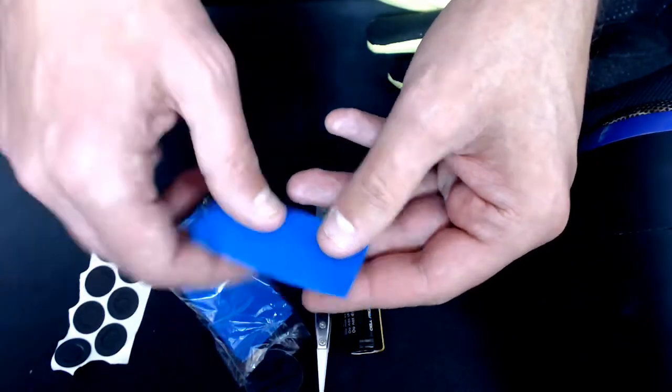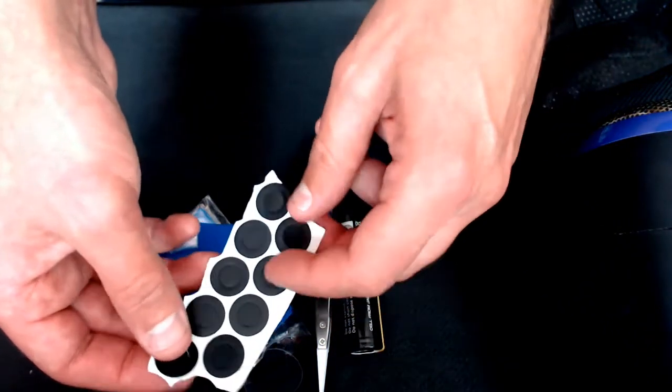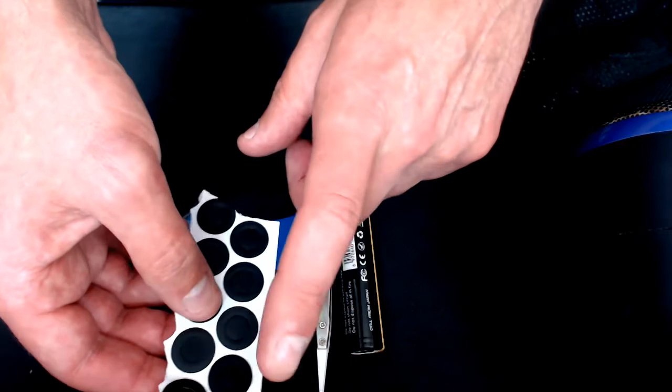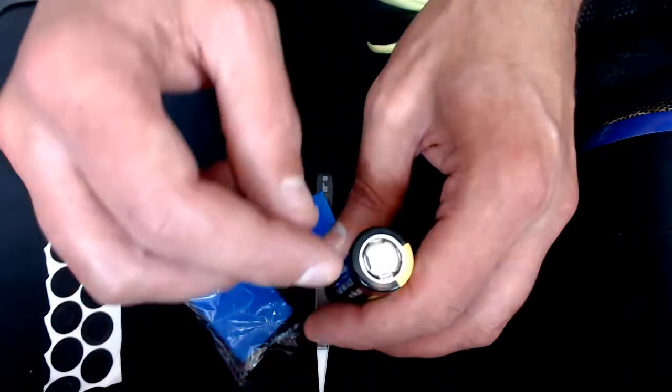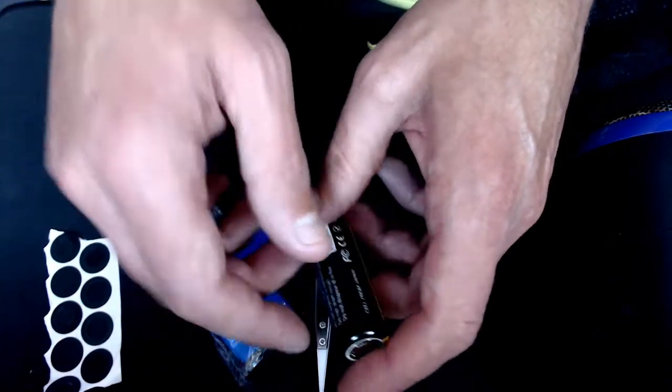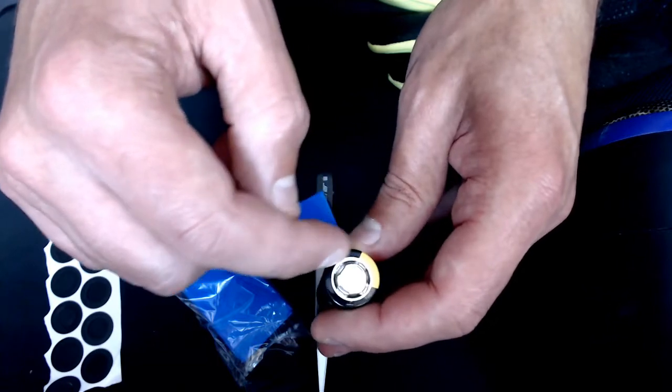We've also got some insulators. I'm not sure if these fit the 20700s but we'll have a look in a minute. You can always just use the one that's already on your battery, but with this one it doesn't look like it's in the greatest condition, but we'll have a look once we get started.